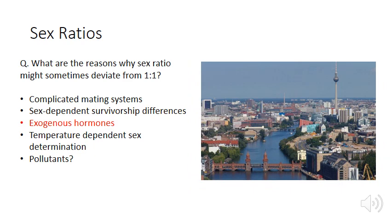Exogenous hormones can also affect sex ratios — for example, when waste products that humans produce are washed into waterways. Some of these chemicals act as endocrine disruptors or hormone agonists that affect the sex determination of organisms. Studies of one of the rivers in Berlin have shown that 70% of fish in Berlin waterways are female, likely as a result of estrogens and other hormone agonists from human waste being washed into the waterways.